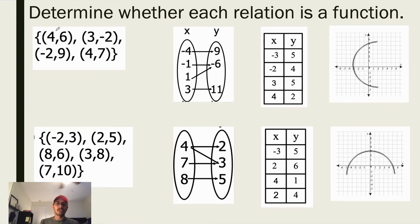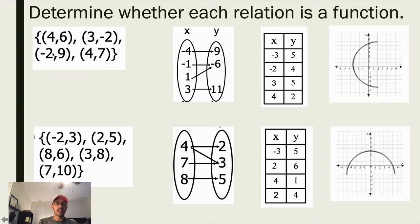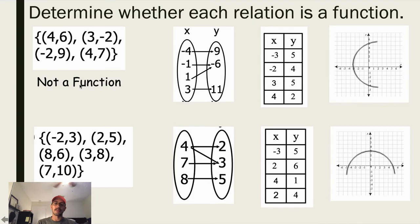Let's look at this first set of ordered pairs. We see that we have an x that's 4, an x that's 3, an x that's negative 2, and an x that's 4 again. We have two x values that are the same going to different y values, so this would not be considered a function.